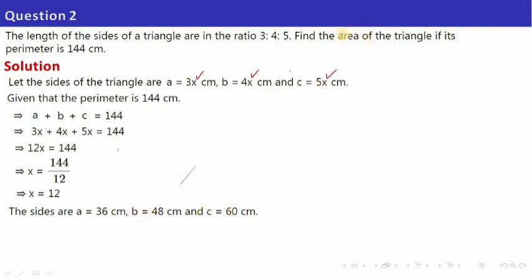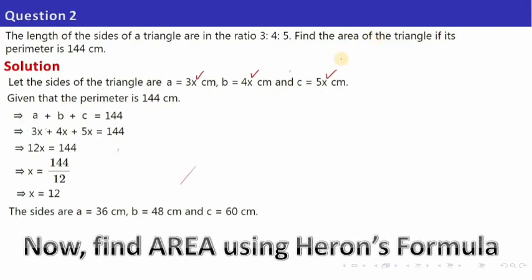Since you have got three sides A, B and C, you have to make use of Heron's formula to find the area. Find the semi-perimeter and you will find out what your area is. You may pause the video and complete the sum by yourself.